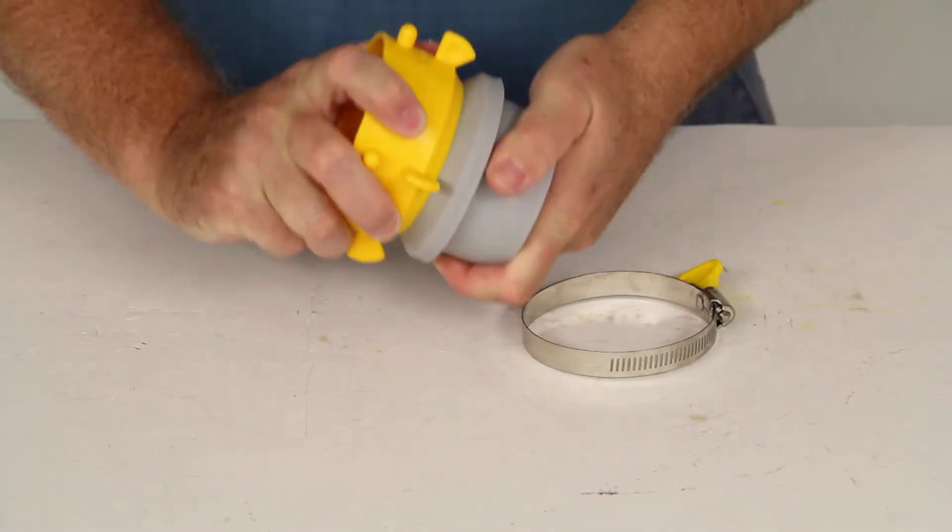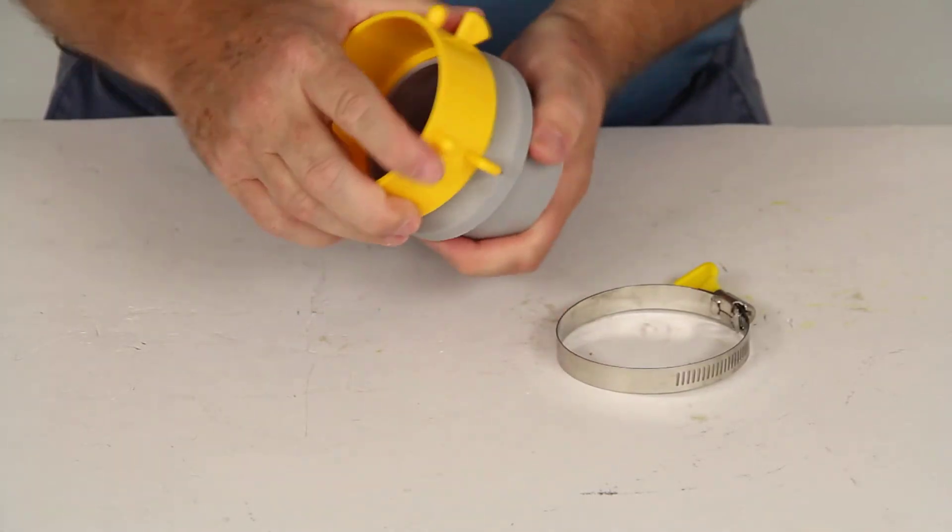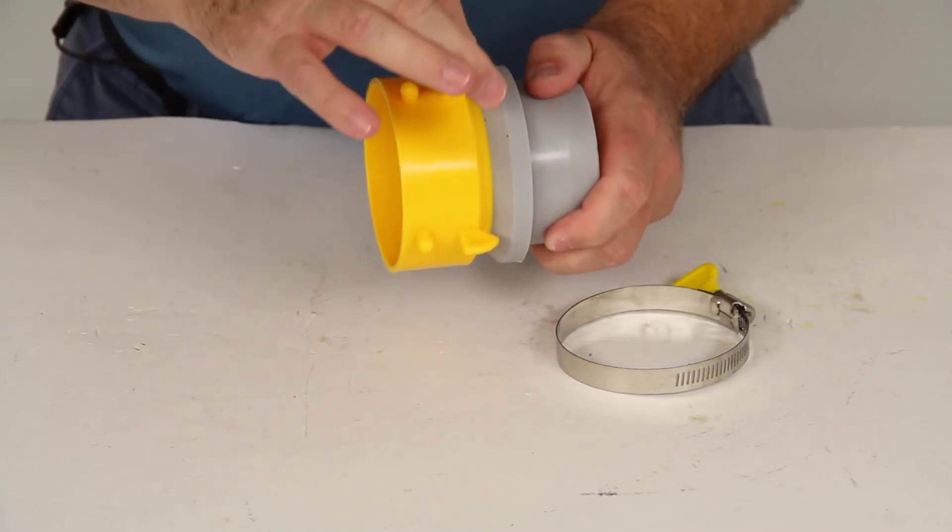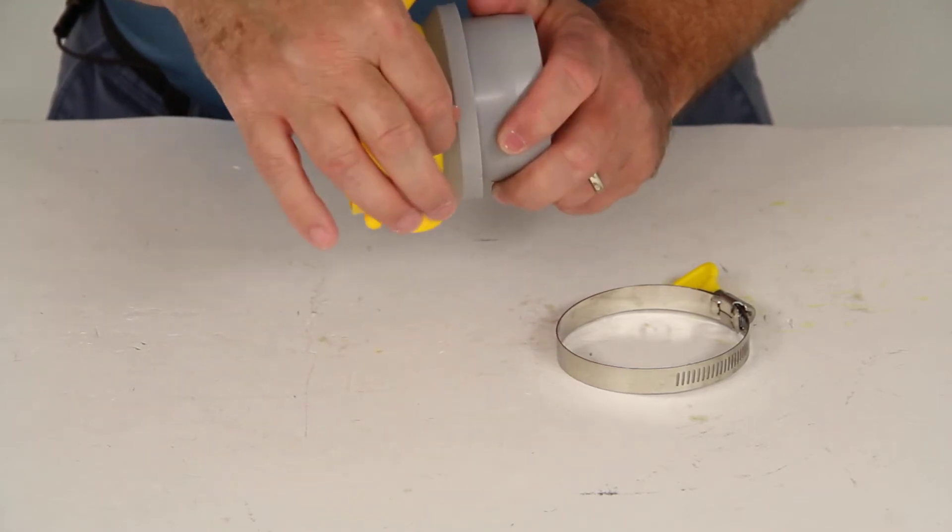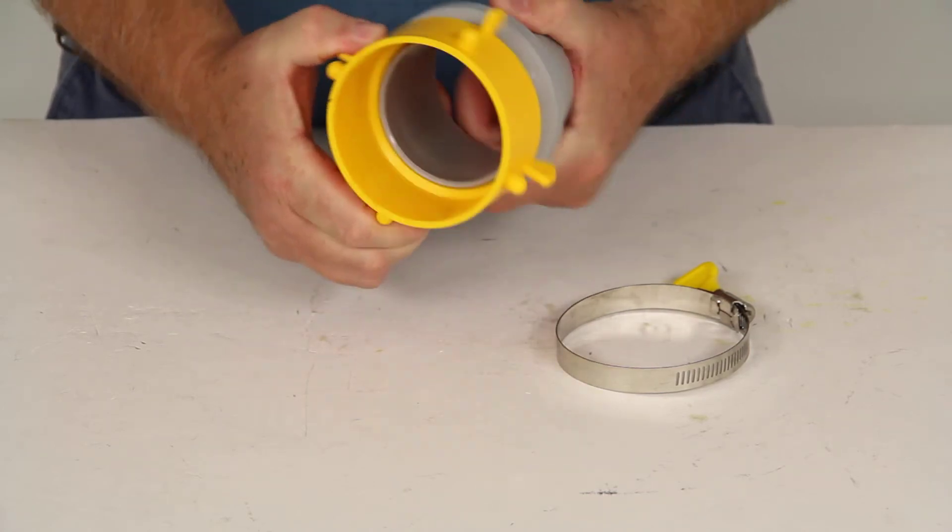The fitting, as you can see, actually swivels 360 degrees for convenient hookup without twisting and kinking your hose. These easy grip wings right here will help you connect to and disconnect from other fittings quickly and easily.